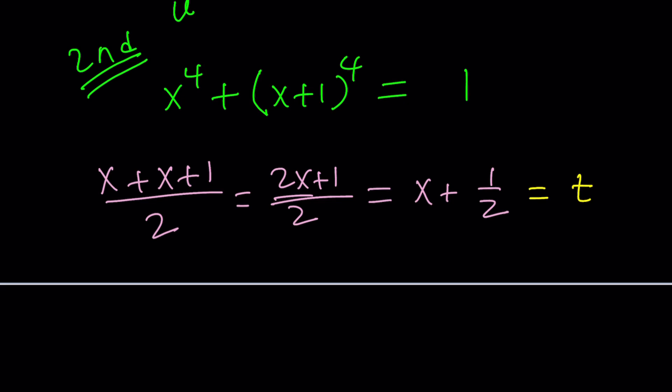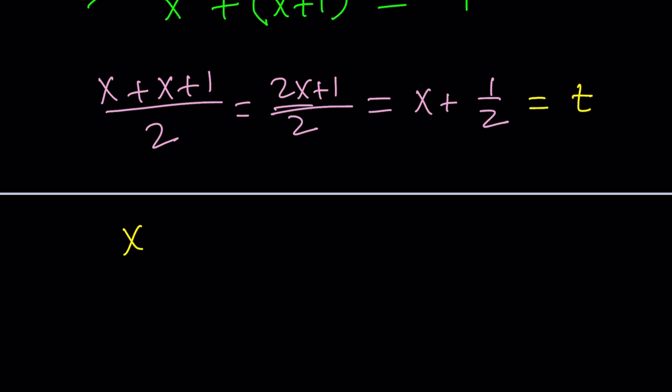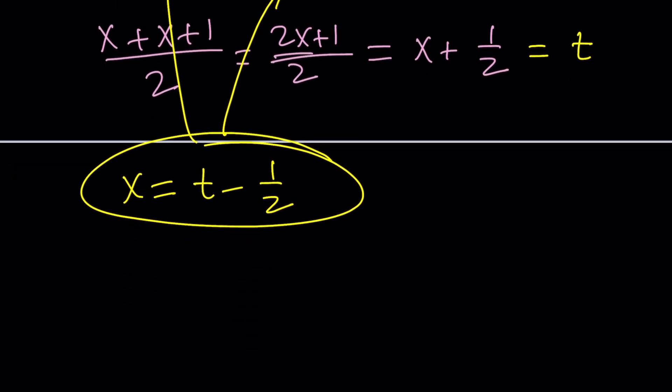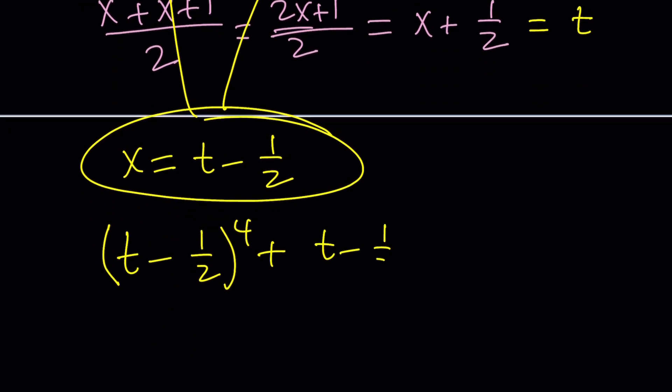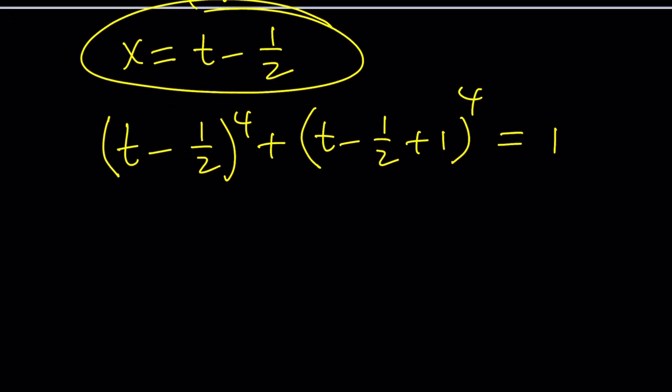So what does it mean to replace x plus one half with t? We don't have it in the equation. Well, you do, actually, indirectly. So this means that you're going to replace x with t minus one half. Make sense? So replace x with t minus one half, raise it to the fourth power. And then here, replace x with t minus one half, and don't forget the plus one, and then raise it to the fourth power. And set that equal to one. Now, why is this important? You'll see. Let's simplify the second expression. That gives us t plus one half to the fourth power. Hence, the symmetry.